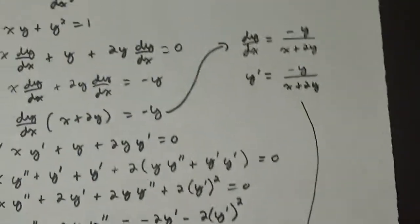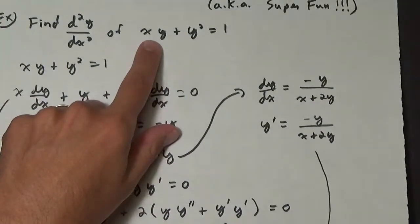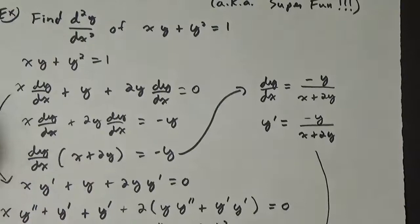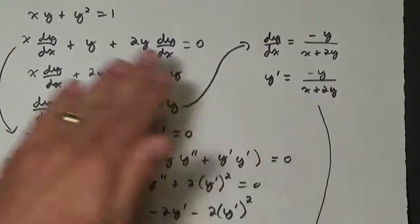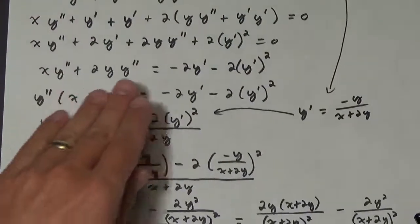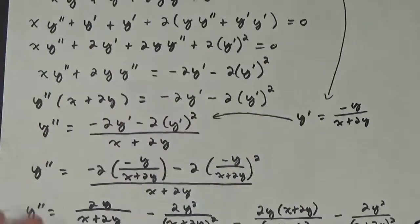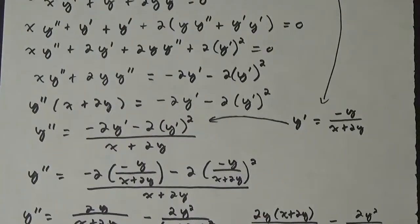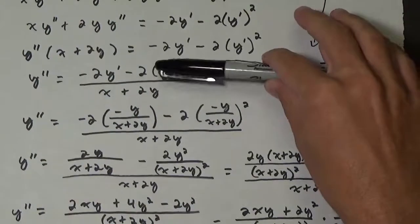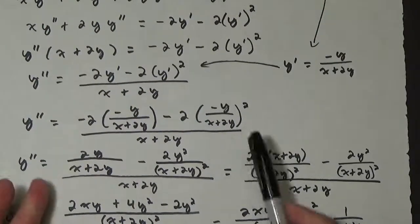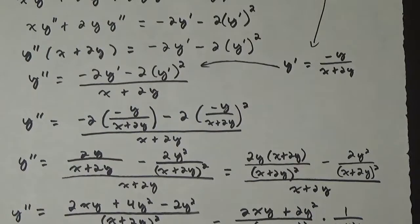So to recap: we had an equation in implicit form and wanted the second derivative. You start by finding the first derivative, then go through the process of finding the second derivative. Usually with higher order derivatives and implicit differentiation, you'll end up having to substitute that first derivative back into the second derivative expression and then simplify.